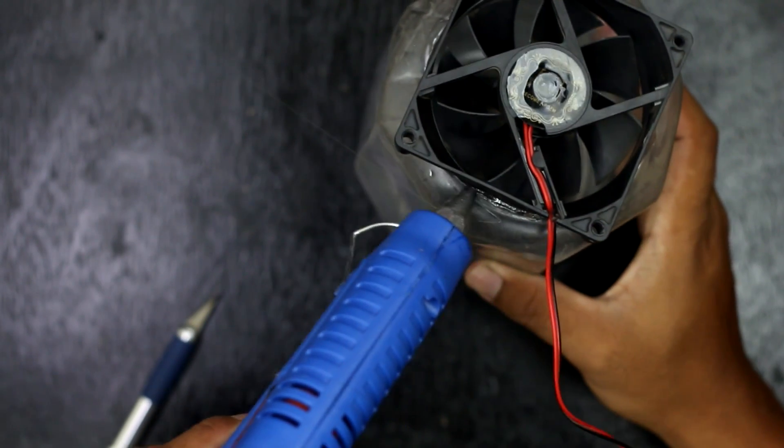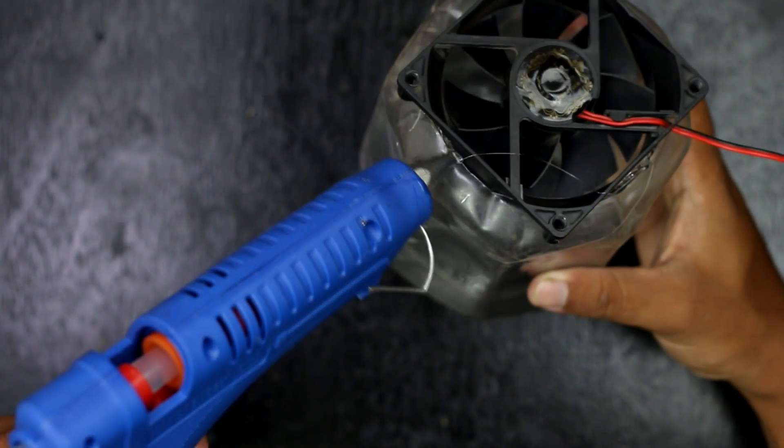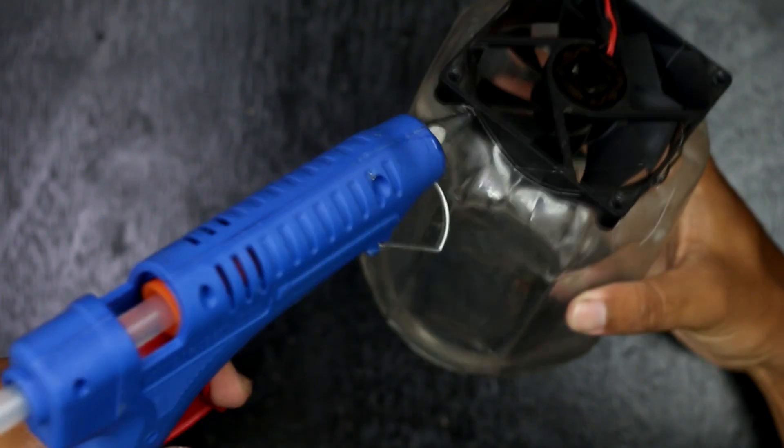Now, it's time to glue the CPU fan and pipe. For gluing, I have used a hot melting glue. You can use other type of glue also.